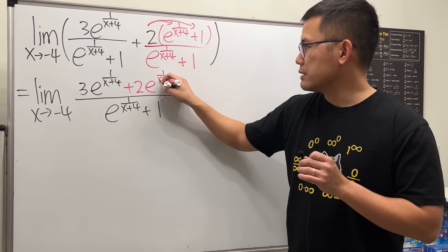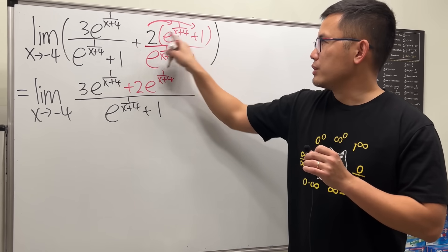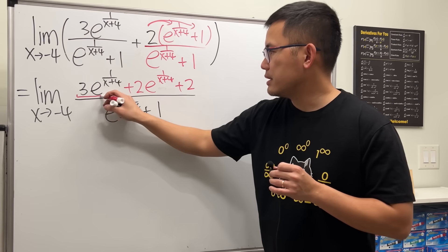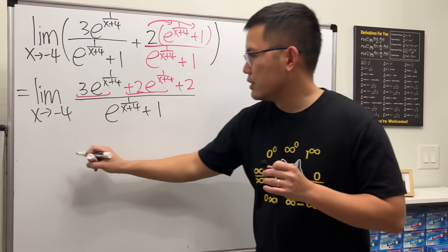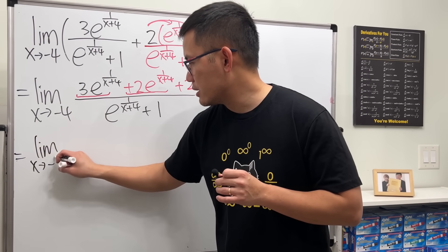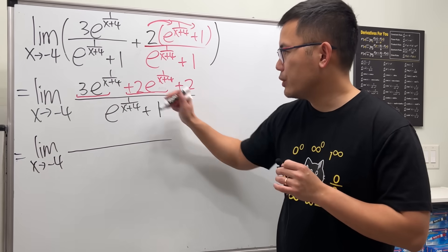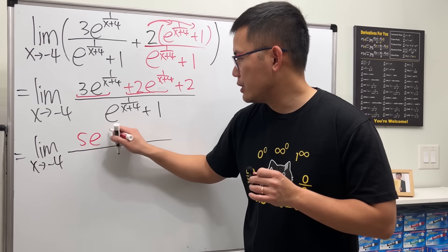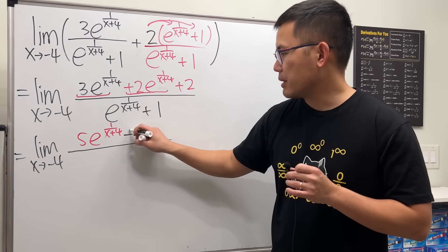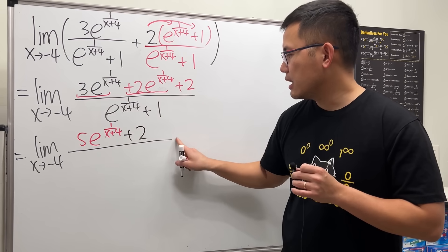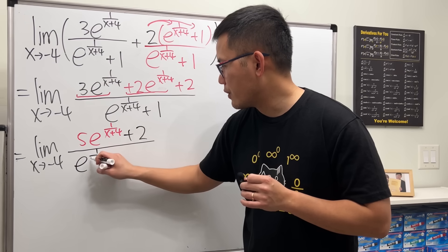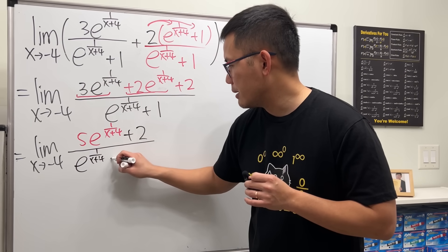Next we combine like terms. We get the limit as x approaching negative four. On the top we have five e to the one over x plus four, and then plus two. On the bottom we still have e to the one over x plus four, plus one.